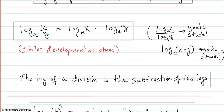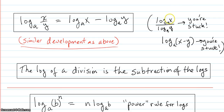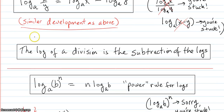Now the quotient rule: log base a of x divided by y is the subtraction of the logs, because when you divide you subtract exponents, and logs are exponents. If you have a division of logs, you're stuck — you can't do anything with that. And if you have a log of a subtraction, you're stuck with that too. The log of a division is the subtraction of the logs because they follow the exponent rules.